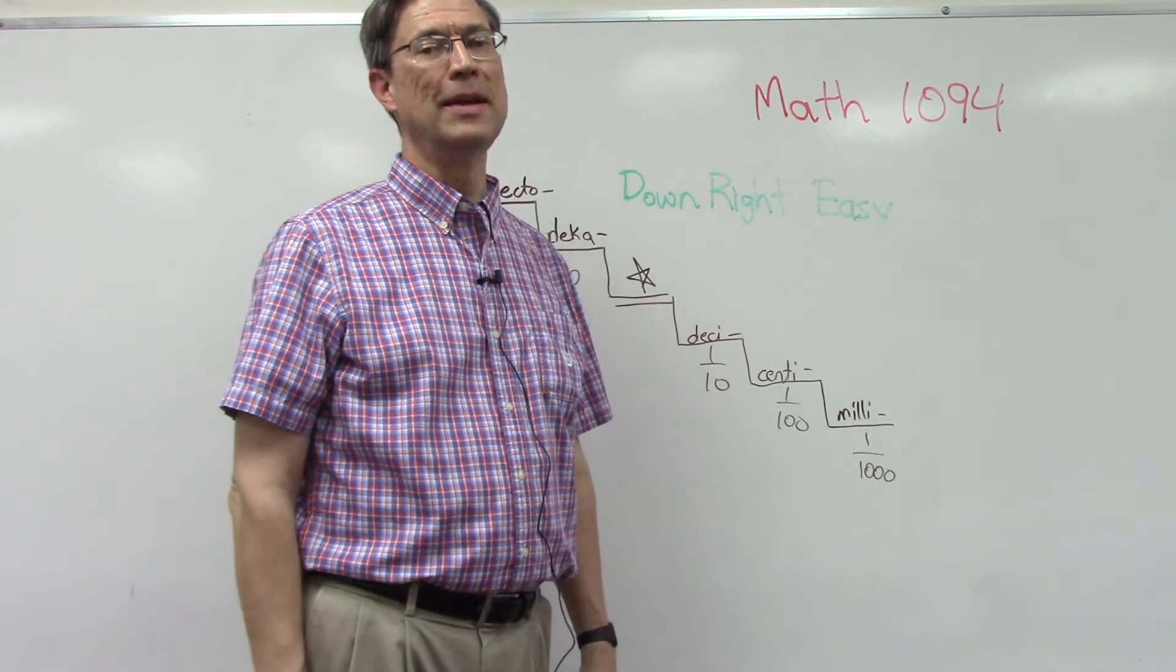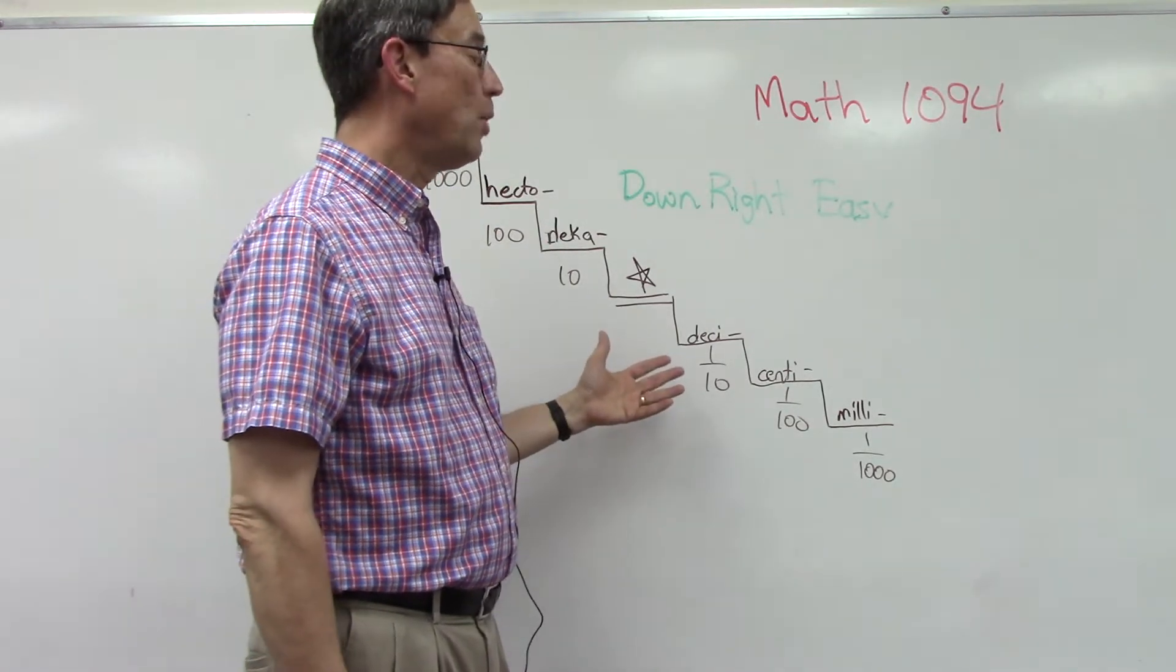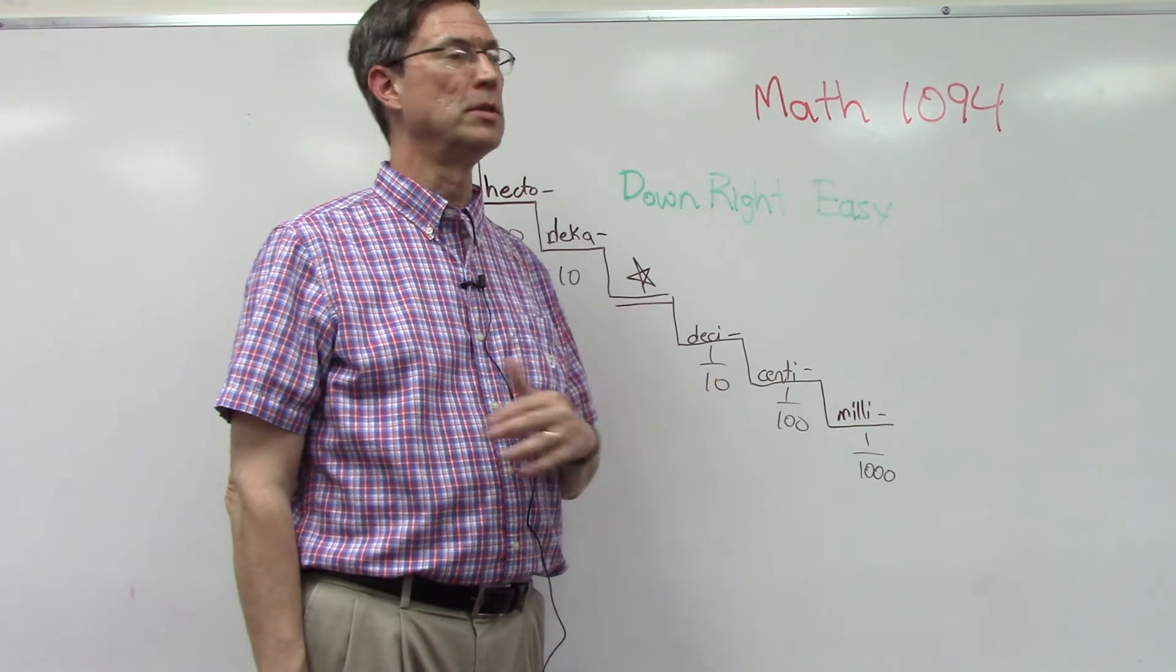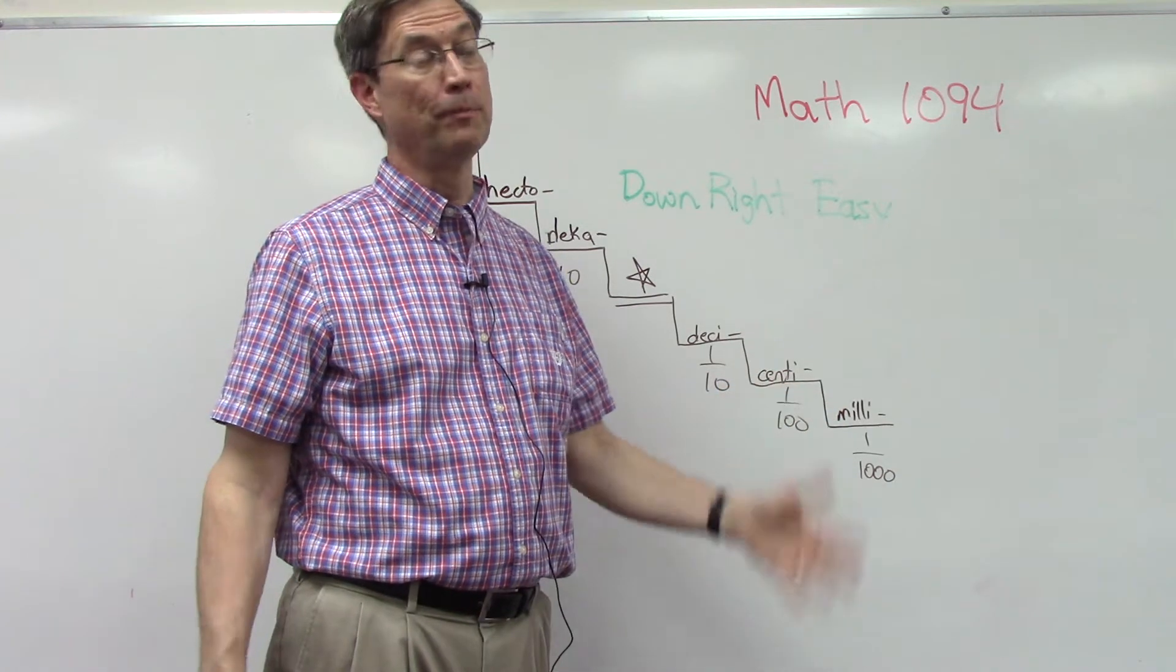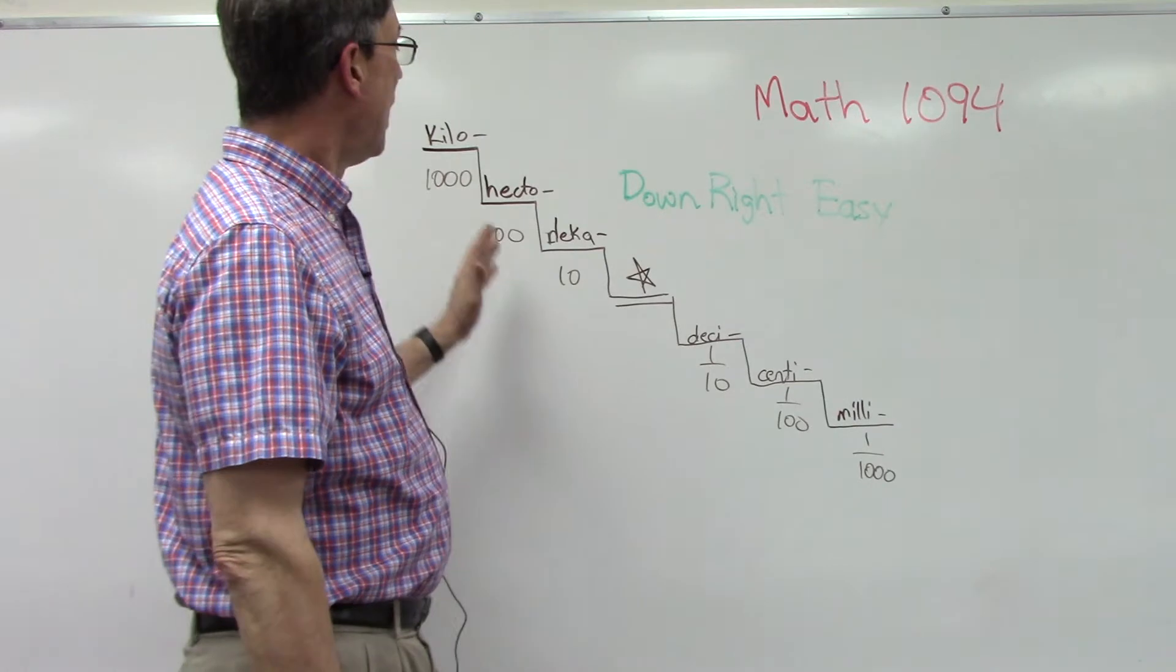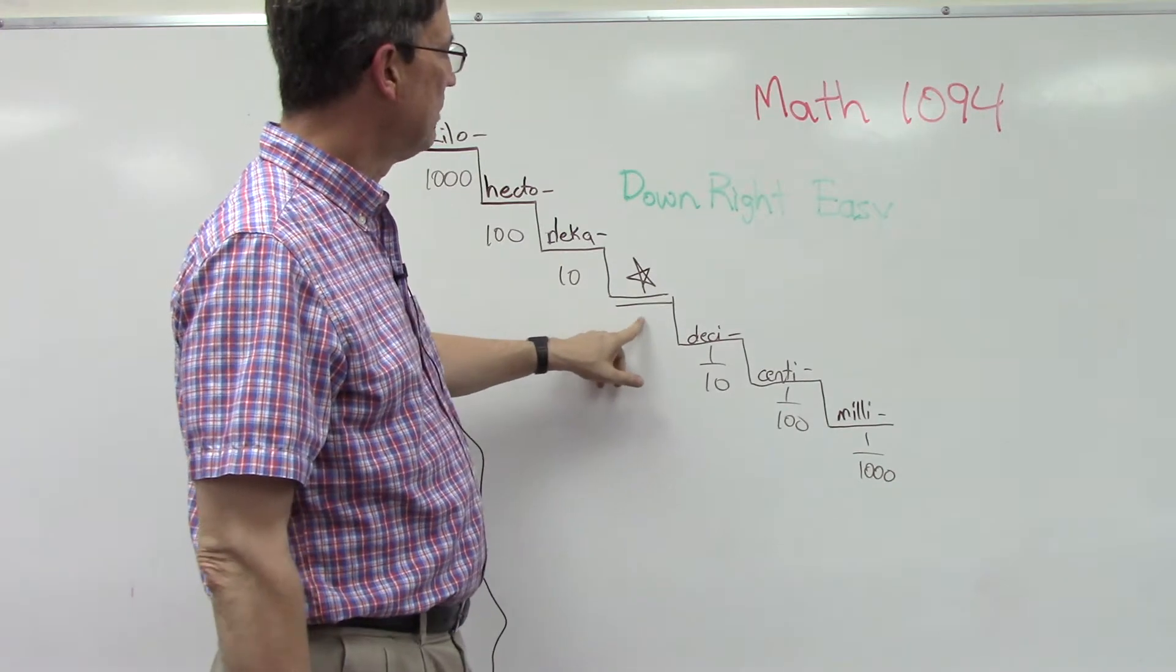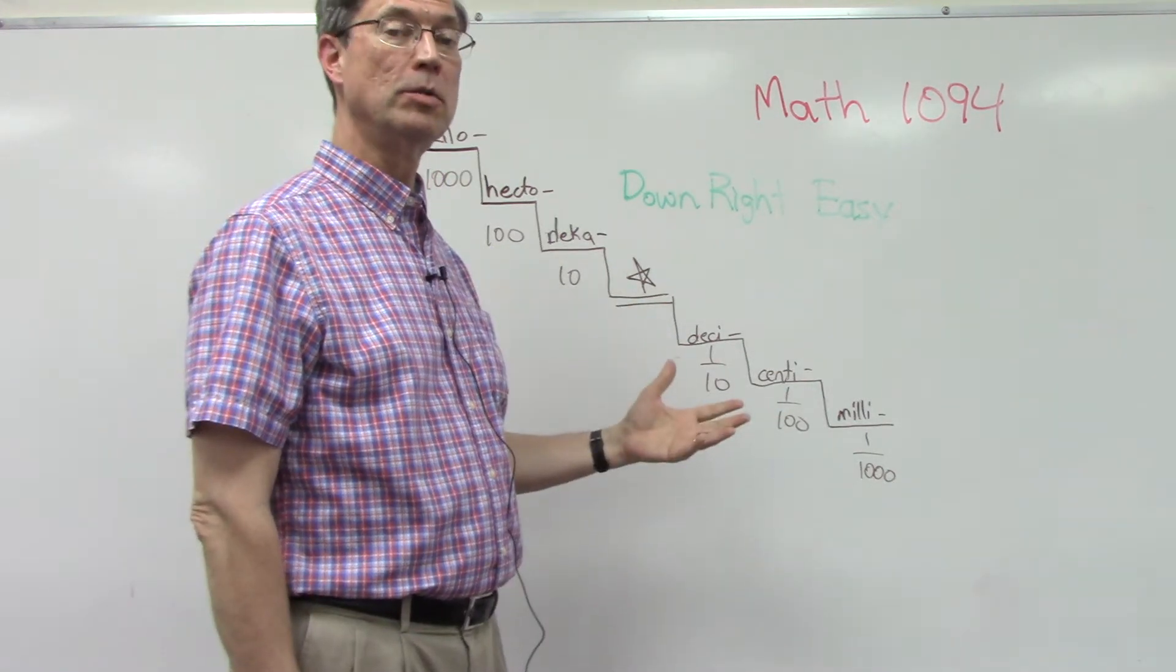Here in the United States we use the English or standard system, and so the metric is not as familiar to us. However, it's a very easy system to use and it's used a lot in science as well as the whole rest of the world except for the United States and Canada and maybe even Great Britain. I call this the downright easy method.